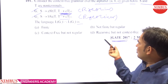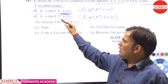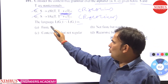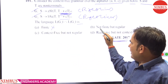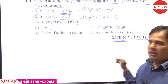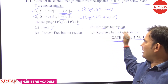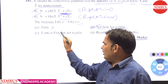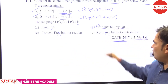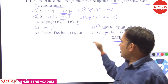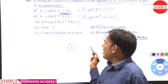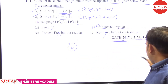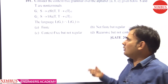So the intersection is regular. Is it finite? No, it is not finite — it is regular but not finite. It is not context-free either. So option B is correct: it is regular but not finite. Remember these properties and you can easily solve the question.